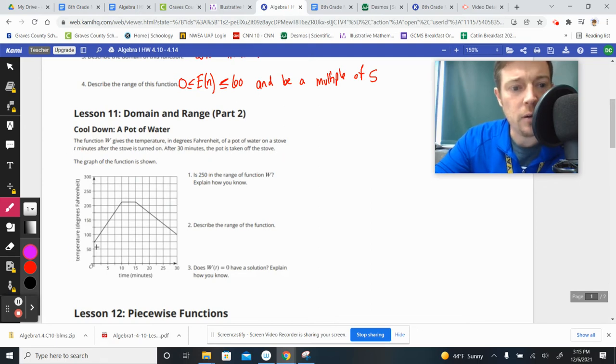So get familiar with the graph here. The temperature's on the y-axis, time's on the x-axis. As time progresses, it's heating up, heating up, and bringing it to a boil. It looks like it boils, and then they kind of turn it off for a little while, and then they take it completely off the stove after a half an hour.